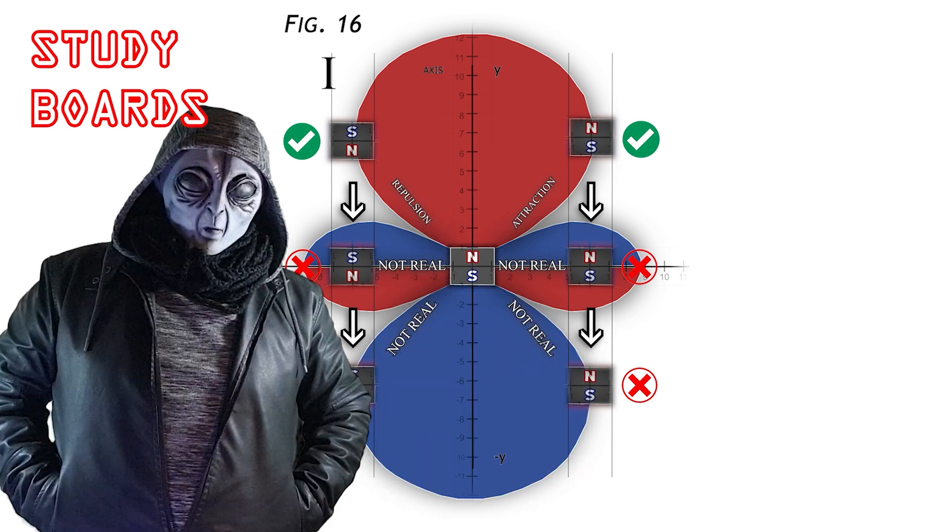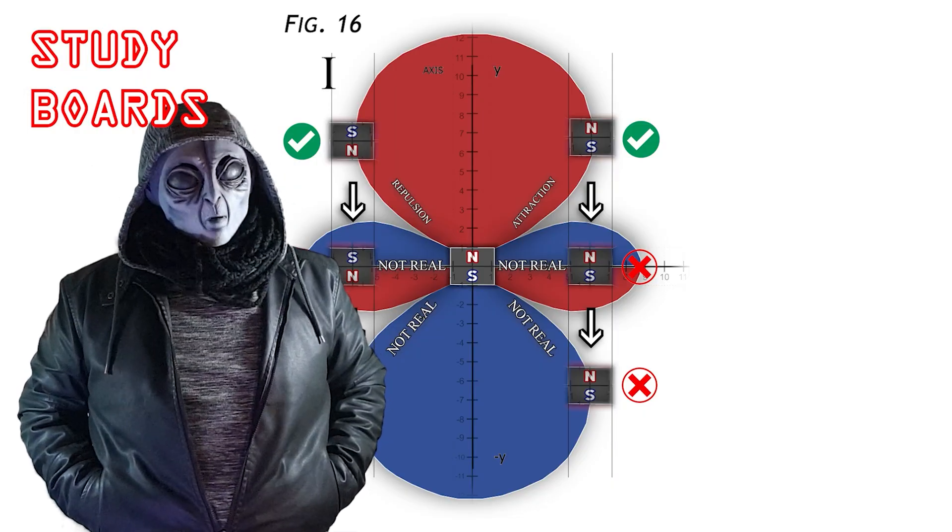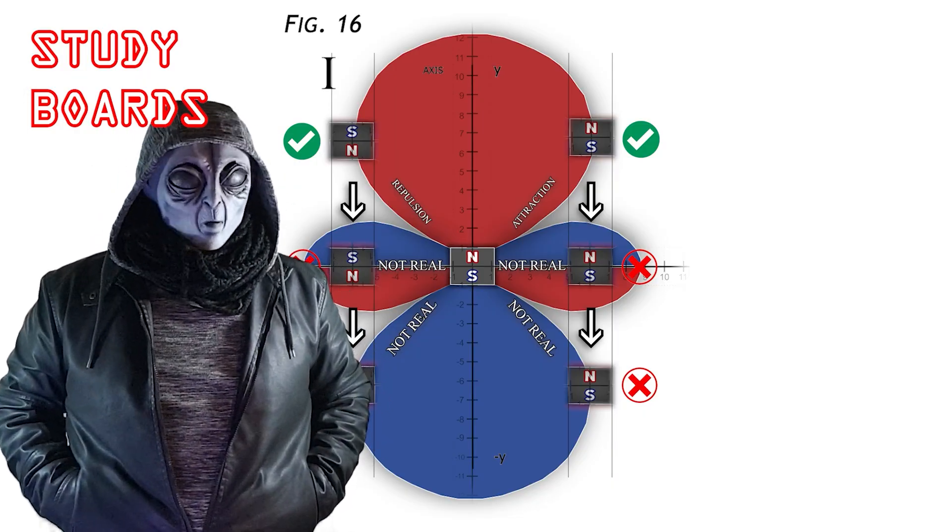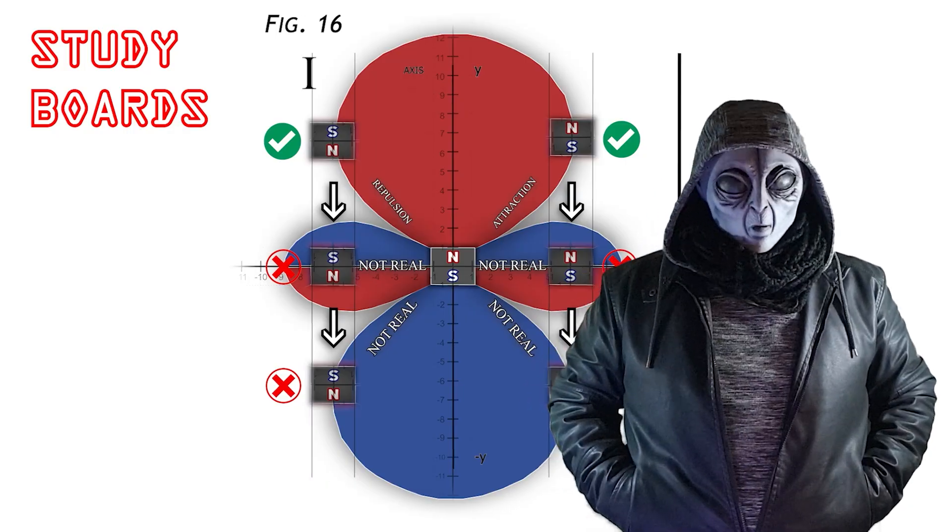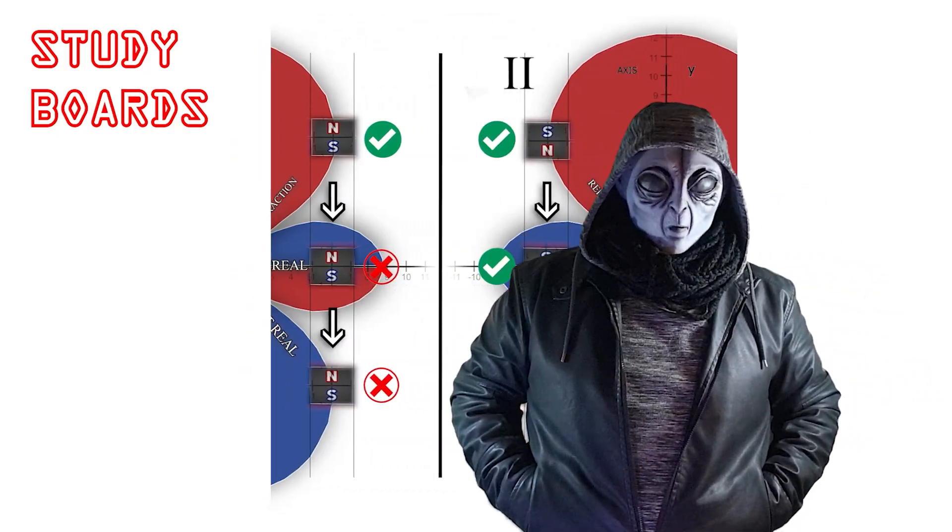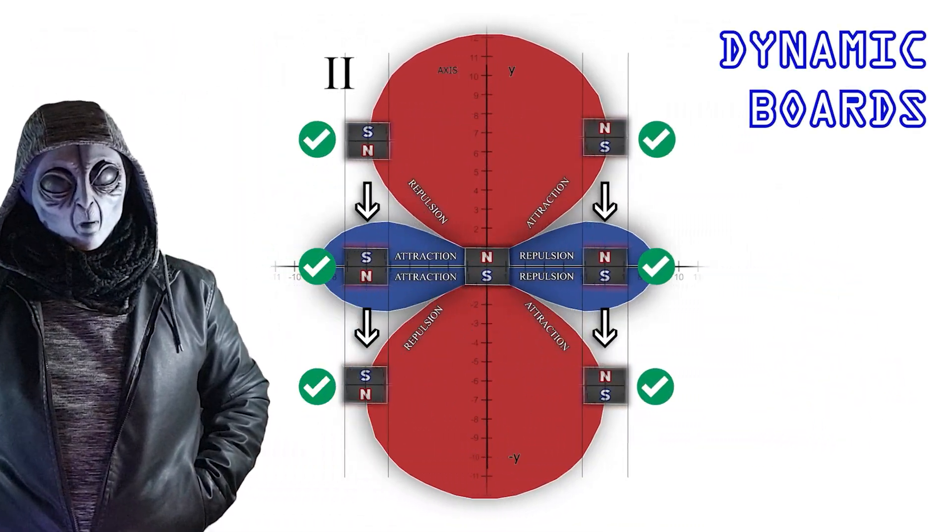So as we said, study boards are very useful for identifying the magnet's polarities and the strange shape of its field. But they cannot be used to predict the real dipole-to-dipole interactions. For that, we must look at the dynamic boards, the ones on the right.